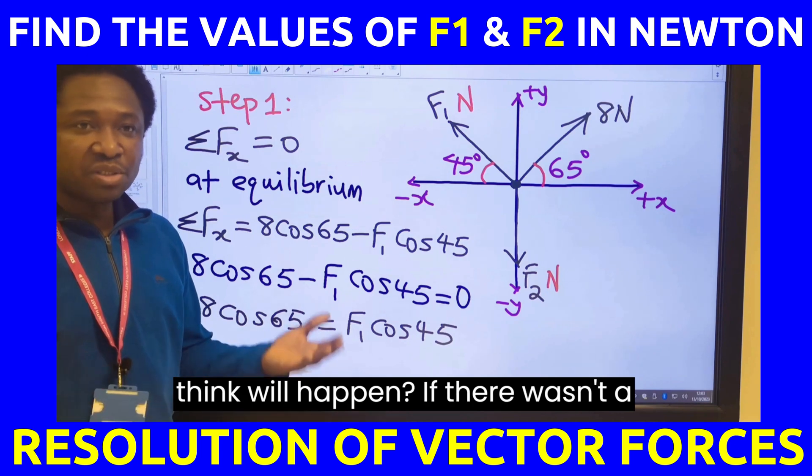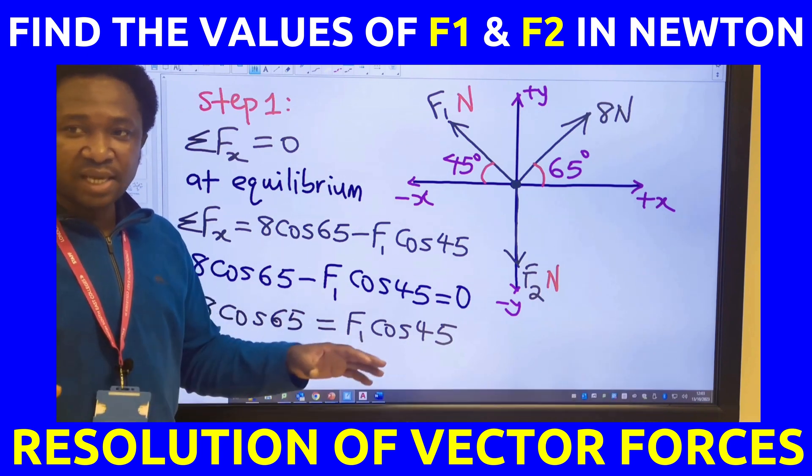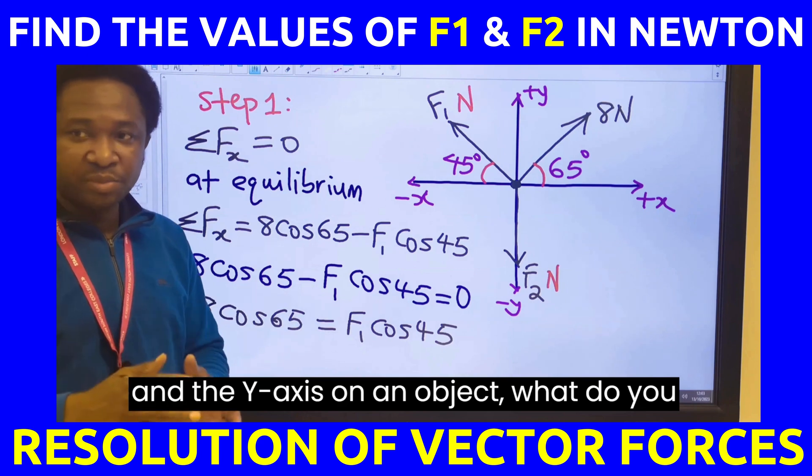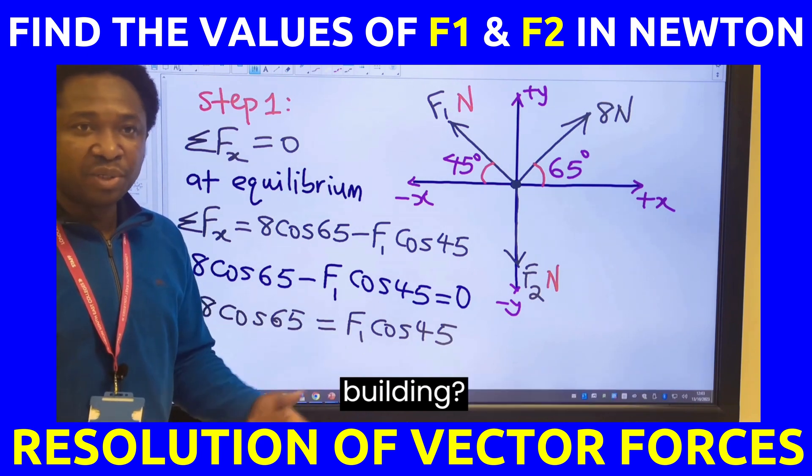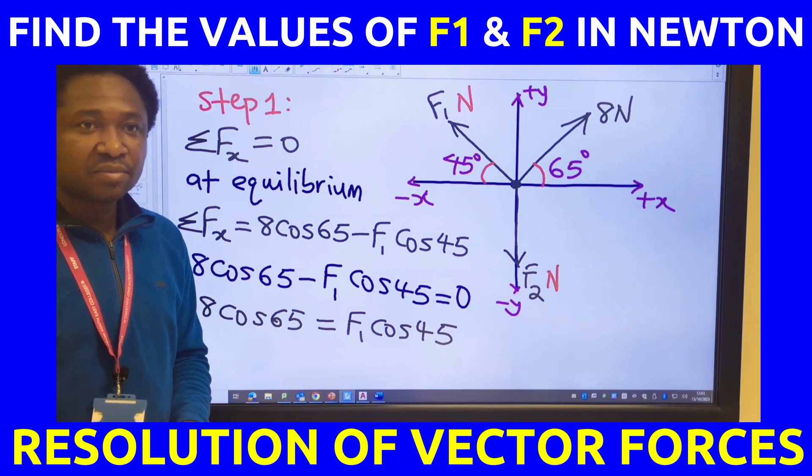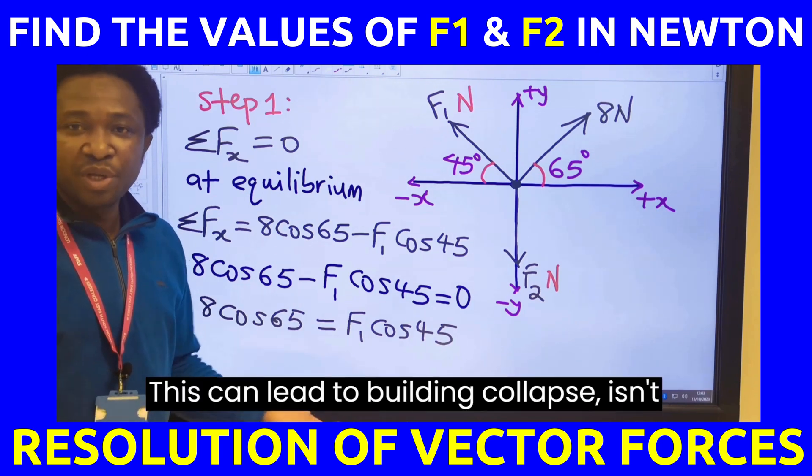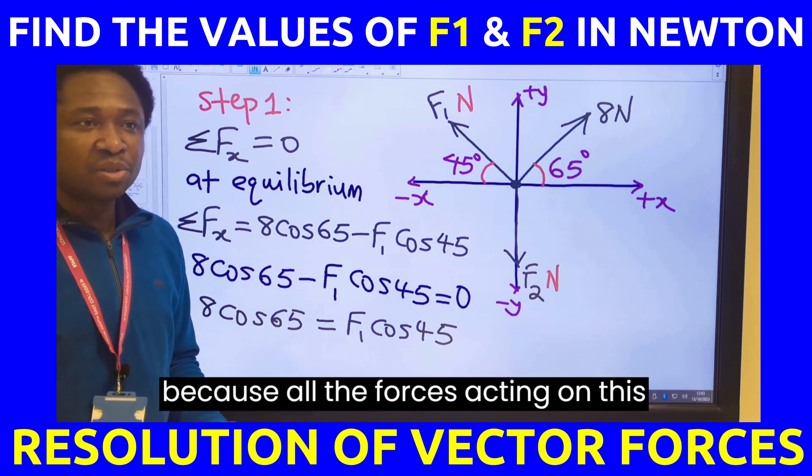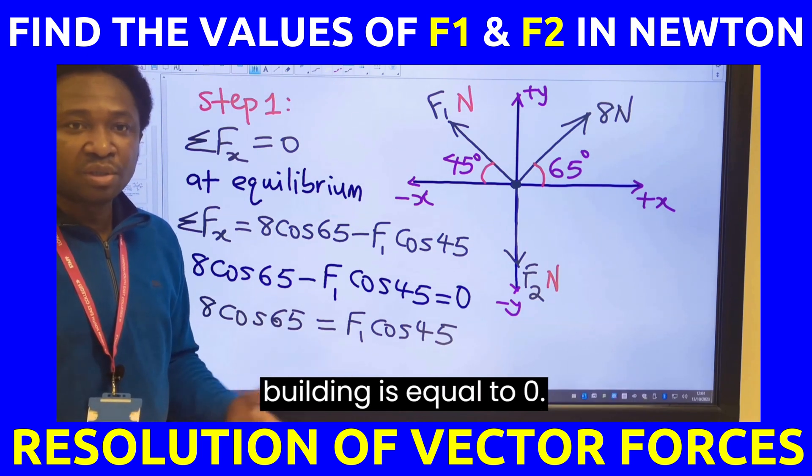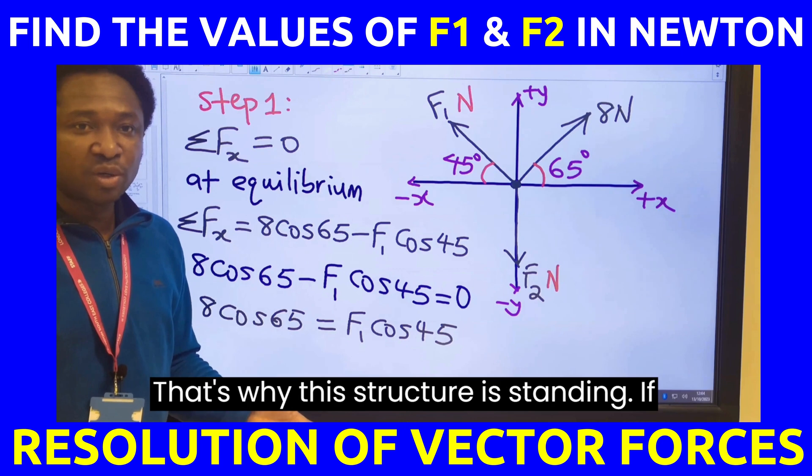If there wasn't a balance on all the forces on the x-axis and the y-axis on an object, what do you think will happen to the object or to a building? This can lead to building collapse. We are in this building now because all the forces acting on this building is equal to 0. That's why this structure is standing.